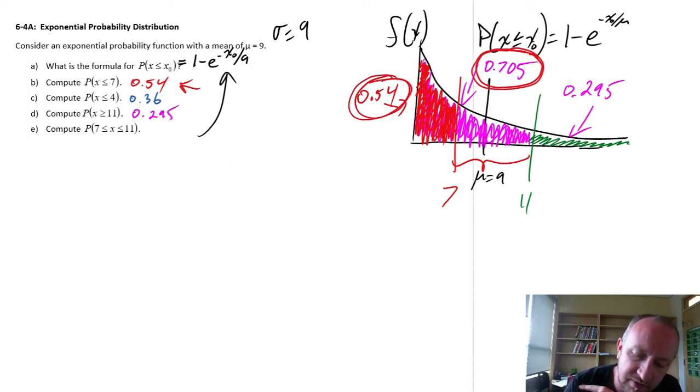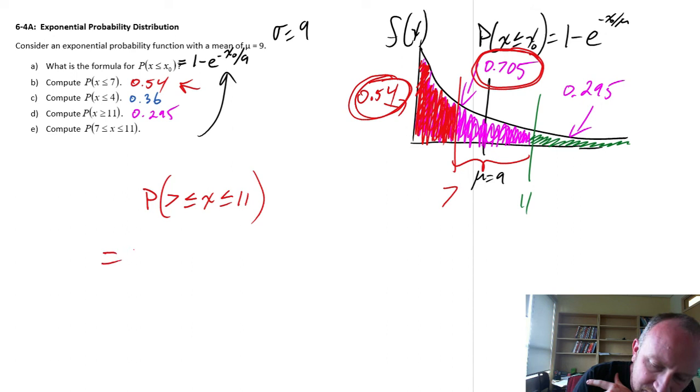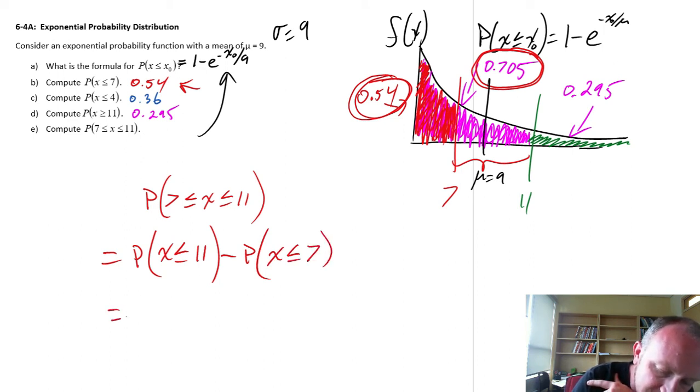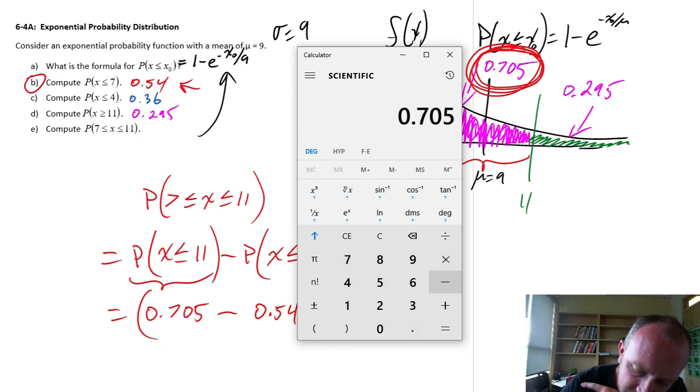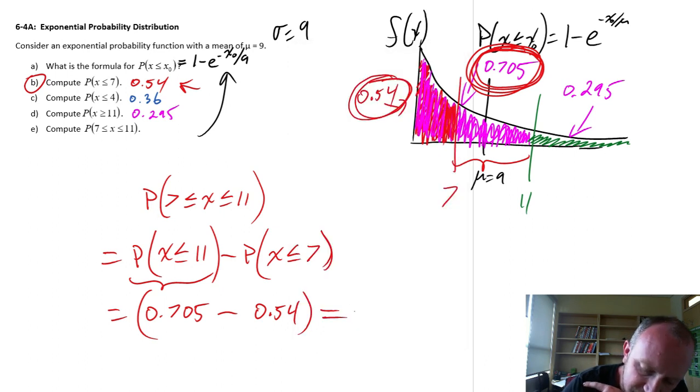So the probability that x is between 7 and 11 is equal to the probability that x is less than or equal to 11 minus the probability that it is less than or equal to 7. So here, we've calculated this right up here was 0.705. Here we calculated this part for part b, 0.54. And so this is equal to 0.705 minus 0.54, which is 0.165. And there we go.